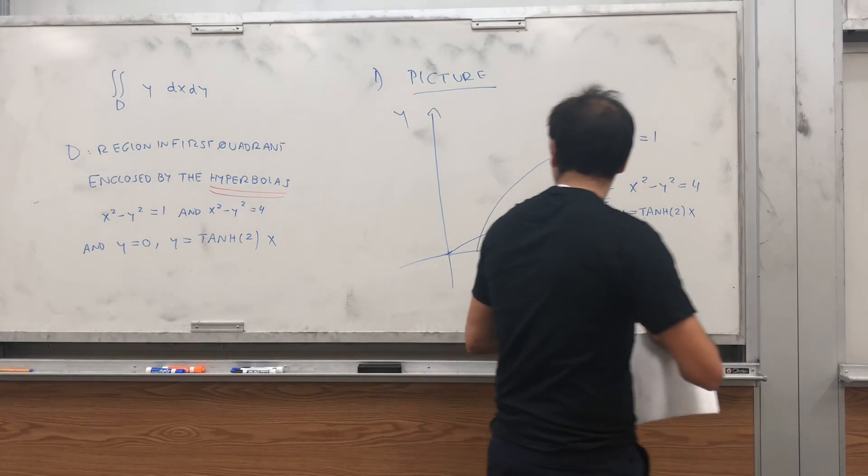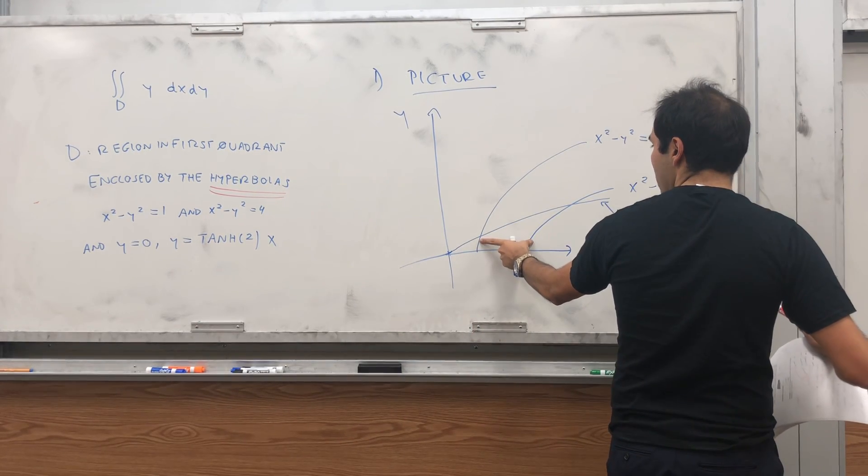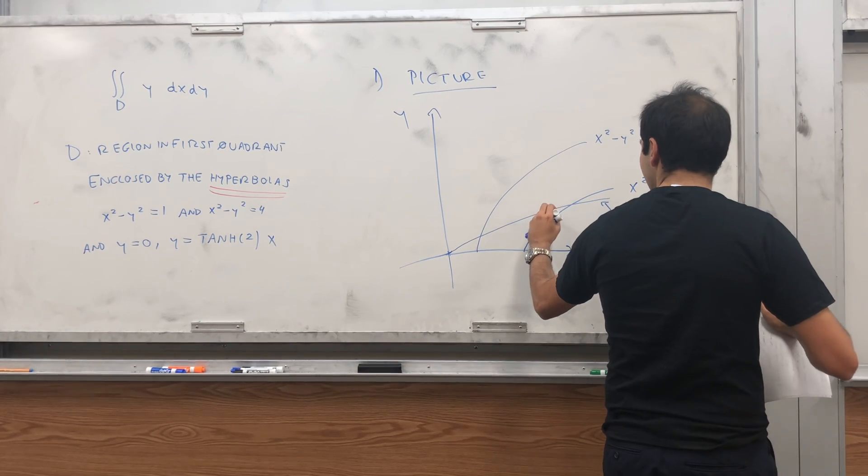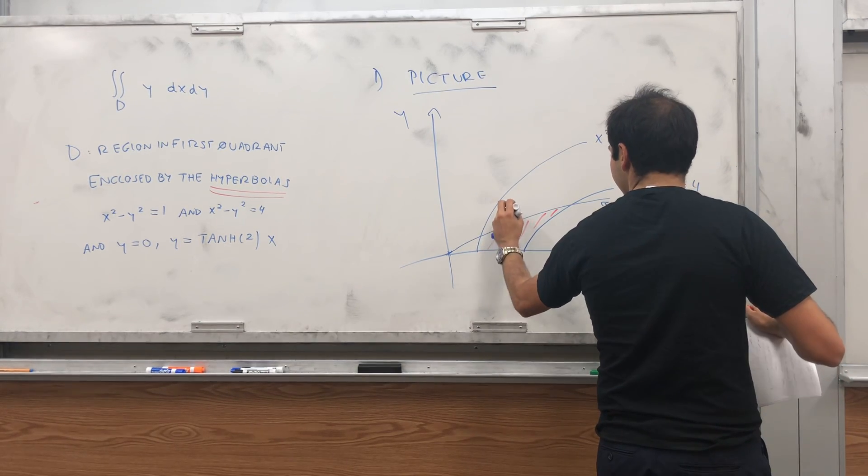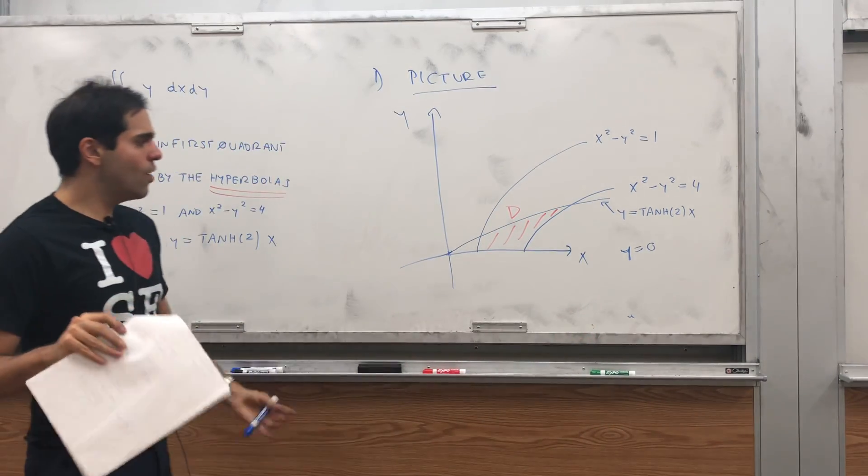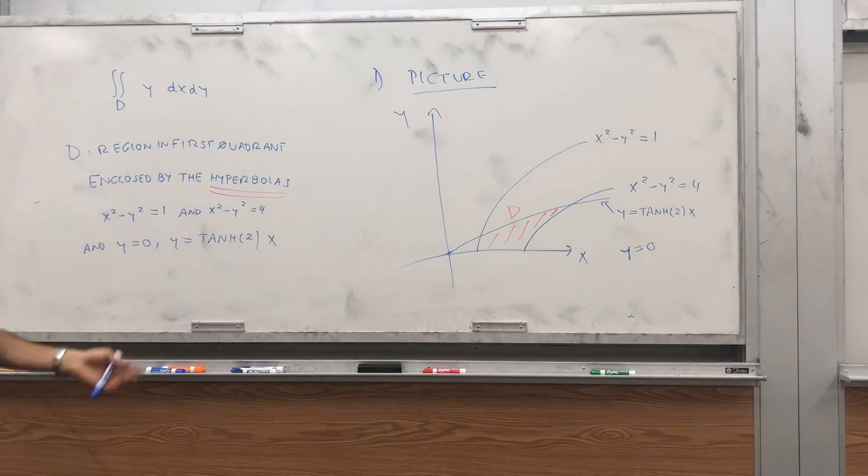And so, what is the region? Again, the region is between those two hyperbolas over this line, under this line. So, it's this hyperbolic region. And the question is now, what coordinates do we use?